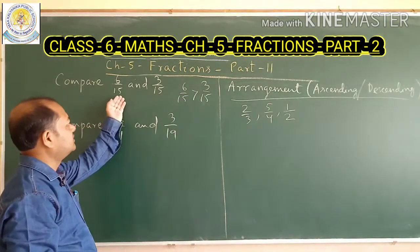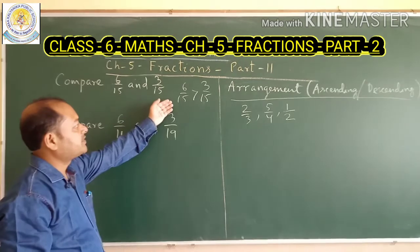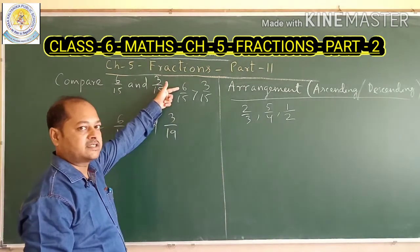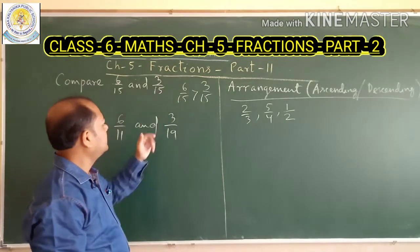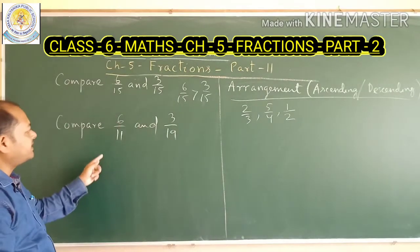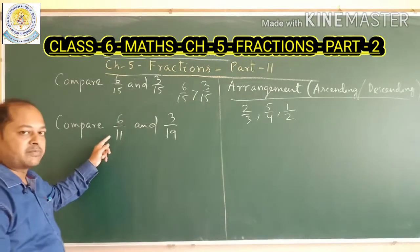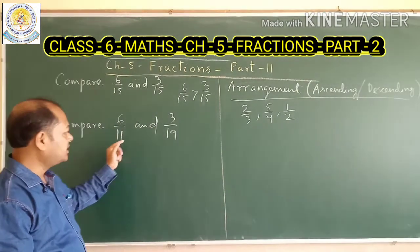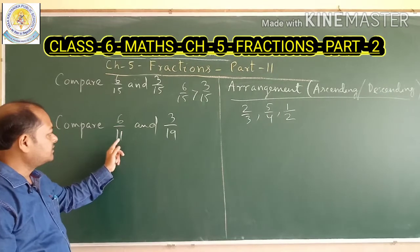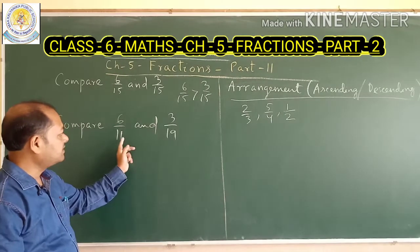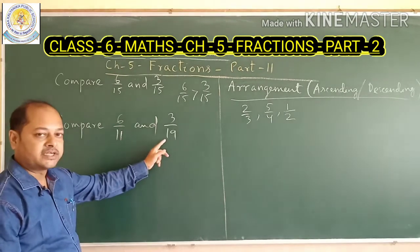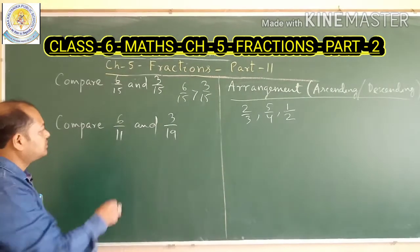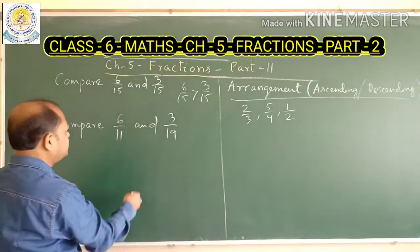Whenever the denominator is the same, the fraction having the highest numerator is the greatest one. Now look at this fraction: compare 6 upon 11 and 3 upon 19. Here we see that these fractions have different denominators. So what is the shortest route to compare these two fractions?